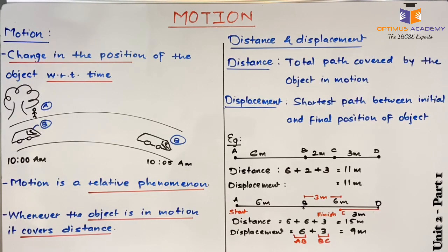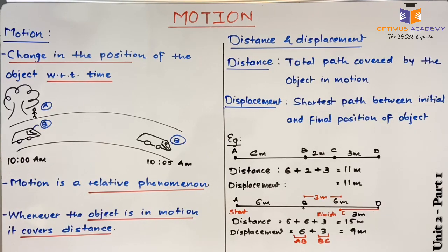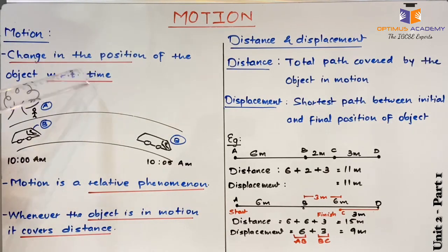For example, imagine someone is standing right behind you at some moment. After one or two minutes, you don't see that person standing behind you anymore. You would say that the person was in motion, or he moved from one place to another place. So change in the position of the object with respect to time is known as motion.